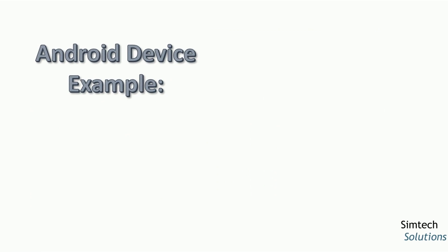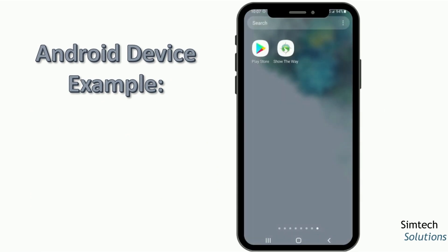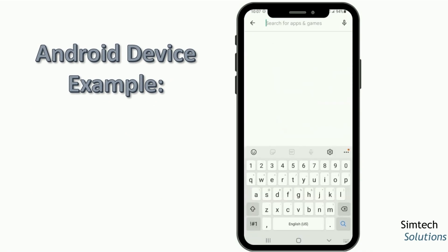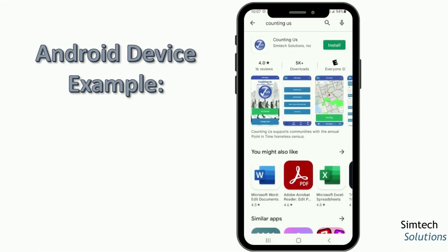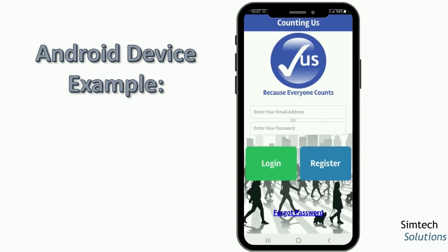Now let's see an example of downloading Counting Us on an Android device. You open up the Play Store and search for Counting Us. You can hit the Install button, and then once it's finished installing, you can open the app and you'll be directly on the homepage, where you can either log in if you're a returning user or register for an account.